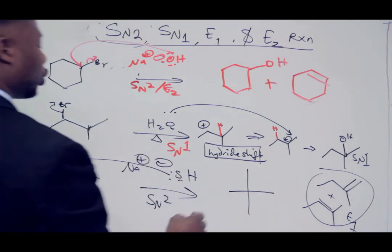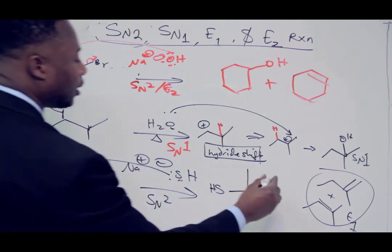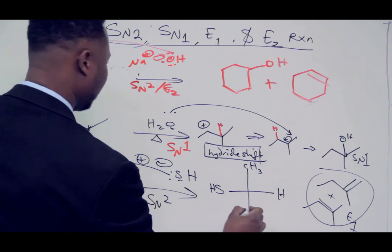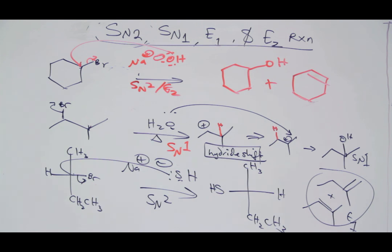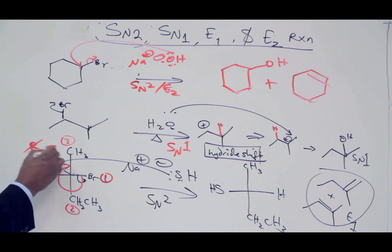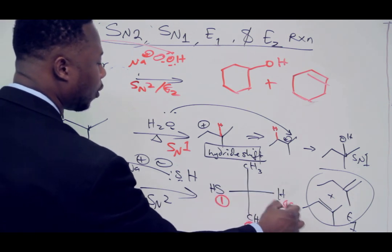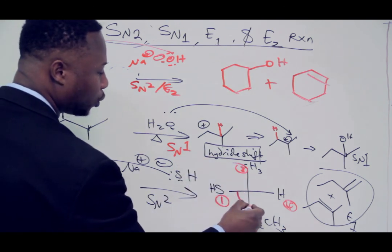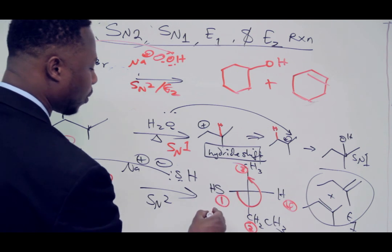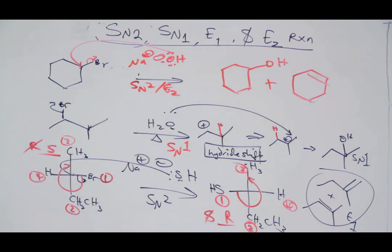Automatically I know this is a Walden inversion. Whatever I now form is going to be Walden inverted — by doing a backside attack, I have what we call an umbrella effect. To verify this, we can assign configuration. If I assign priorities 1, 2, 3, 4 — going from 1 to 2 to 3 with hydrogen in-plane — the original configuration was R, but now it's S. Looking at the product: assigning 1, 2, 4, 3 going counterclockwise with hydrogen in-plane gives S, but it was originally R. By Walden inversion, I went from S to R, confirming the Fischer projection product is correct. That concludes today.